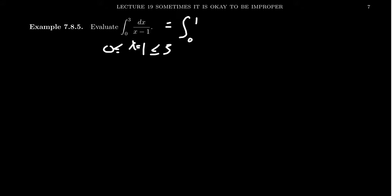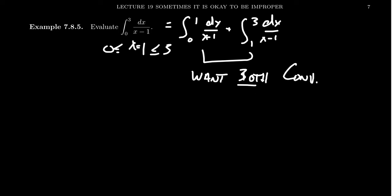So, we have to break it up from 0 to 1, dx over x minus 1, plus the integral from 1 to 3, dx over x minus 1. So, if you have a discontinuity in the middle, you have to break it up. And in order for this thing to be convergent, both pieces have to be convergent. So, what we want is that both are convergent. If any one of the pieces is divergent, the whole thing will be divergent.